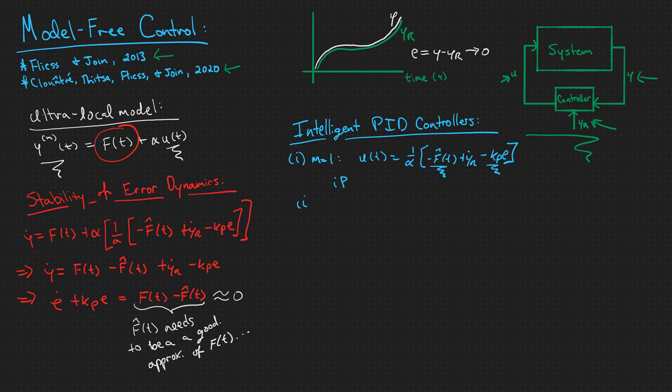If we were to go up to an ultralocal model of order two, we would derive the controller in the exact same way that we did for order one. We would use this ultralocal model in the corresponding desired error dynamics. And we would derive a control law like this: u of t is equal to one over alpha times minus f hat of t plus y sub r dot minus kp e minus kd e dot. This is called an intelligent proportional derivative controller because we have a proportional term, a derivative term, and again the intelligent part of updating f of t via f hat of t.